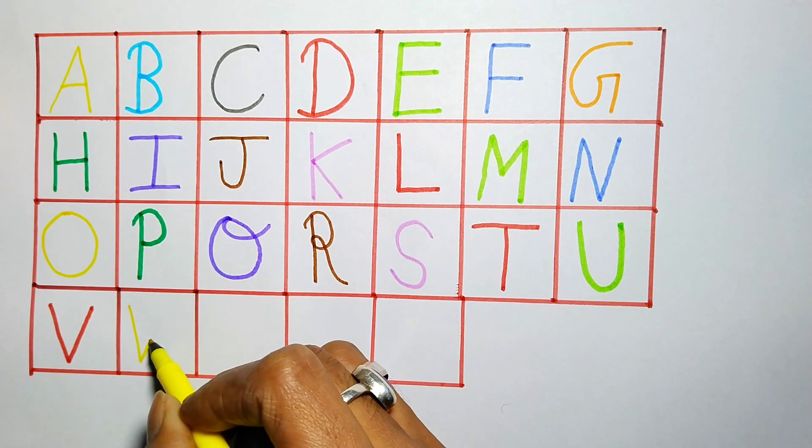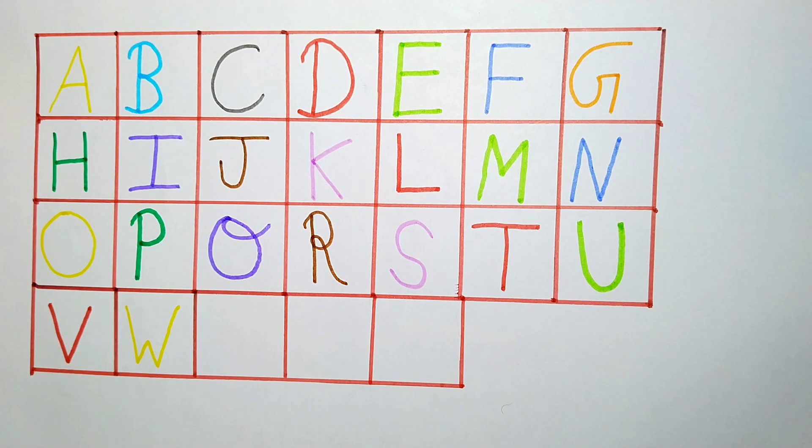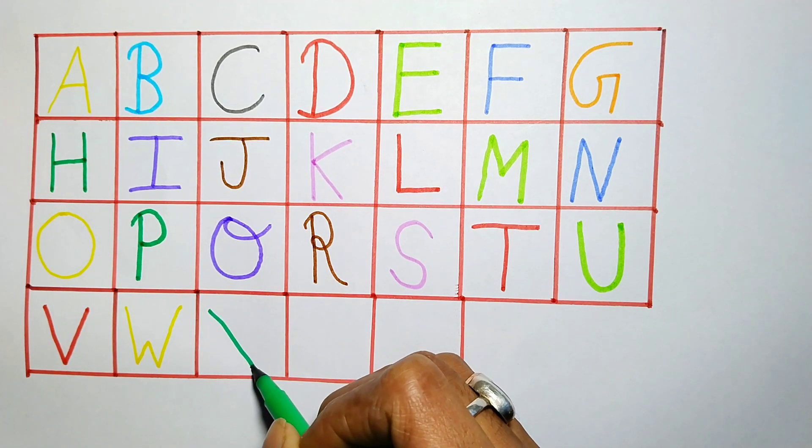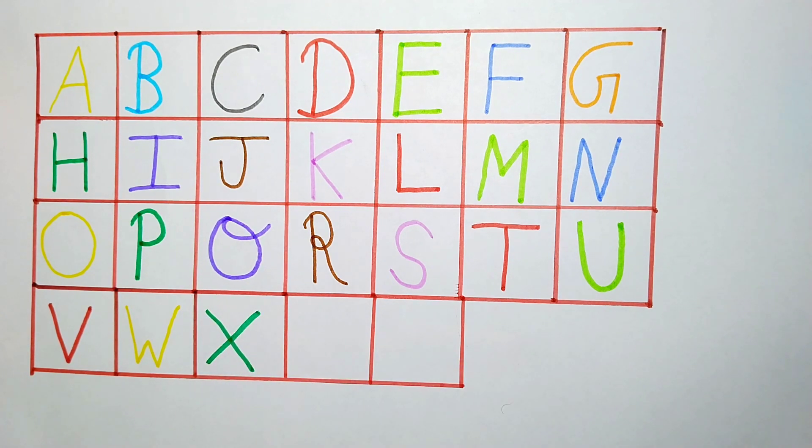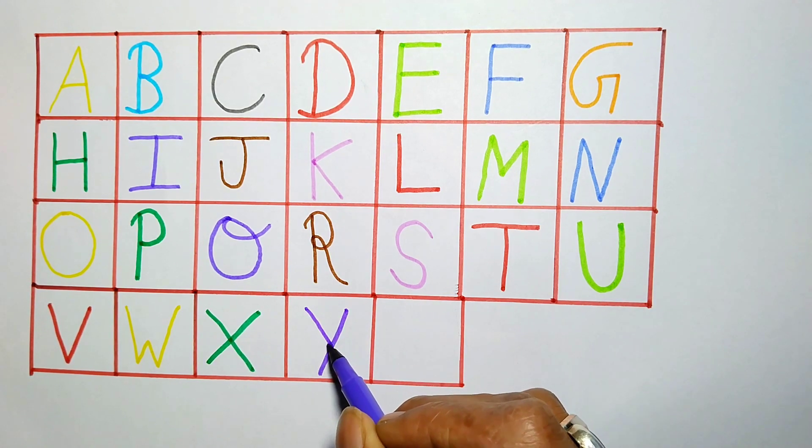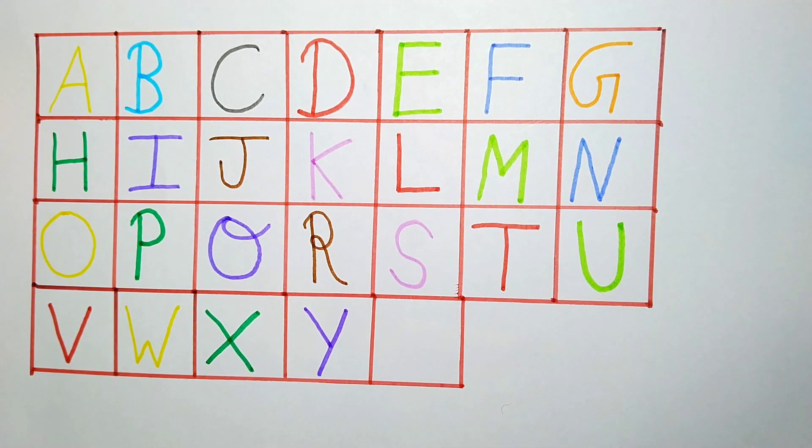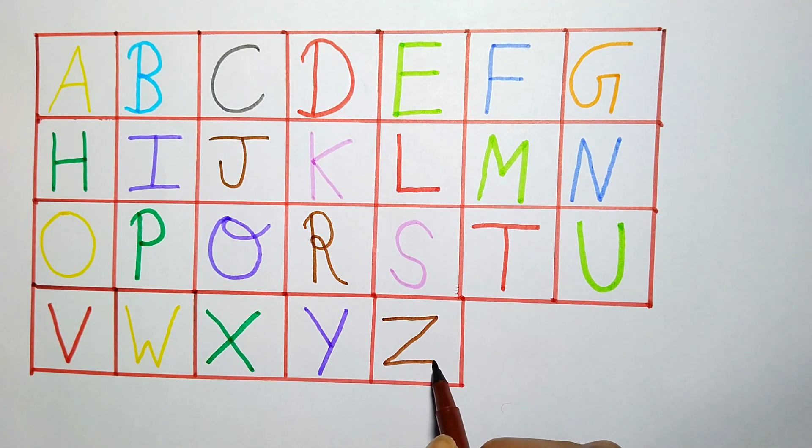D, E, F, G. W, W for watch. X, X for x-ray. Y, Y for yard. Z, Z for zebra.